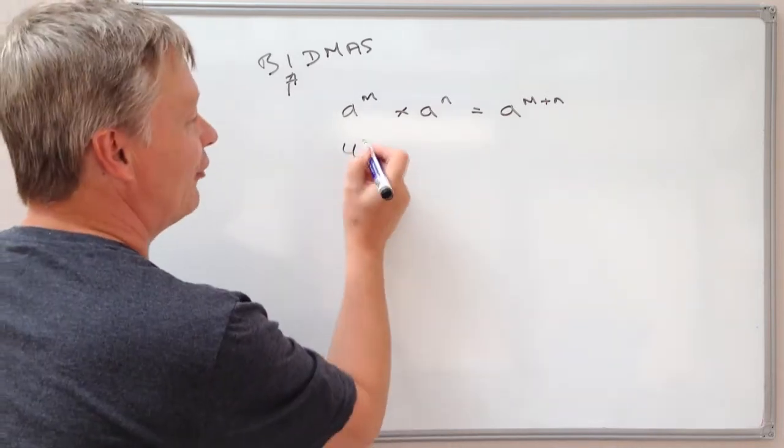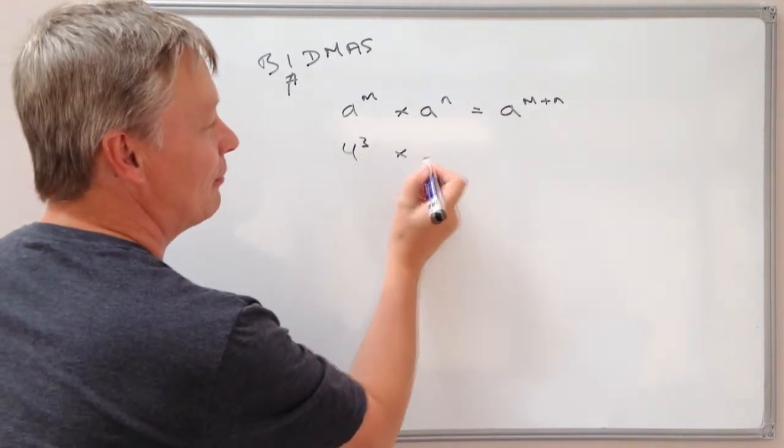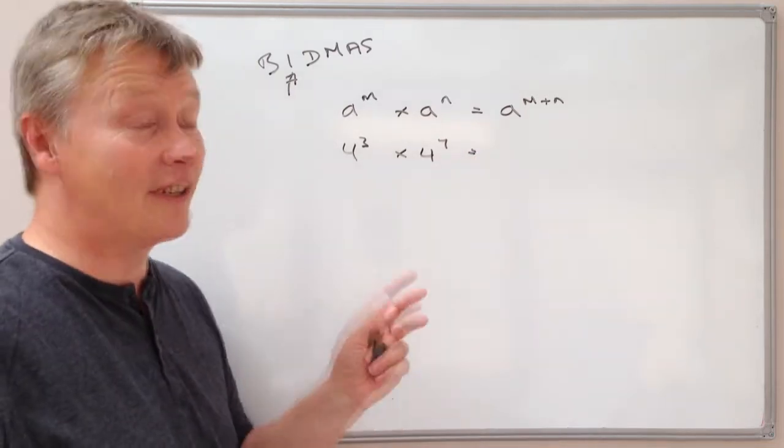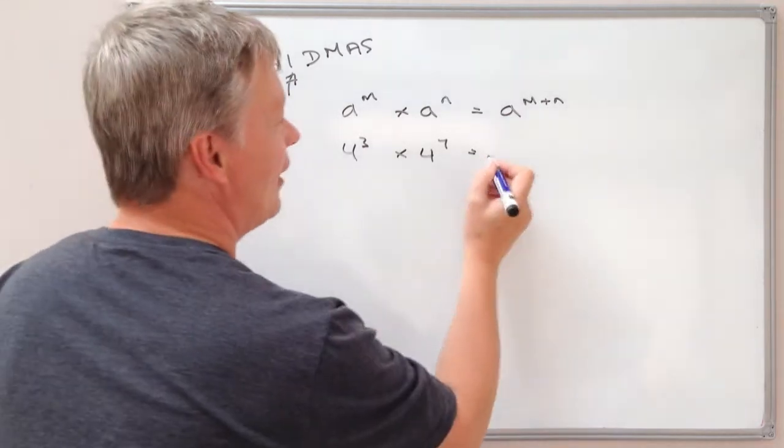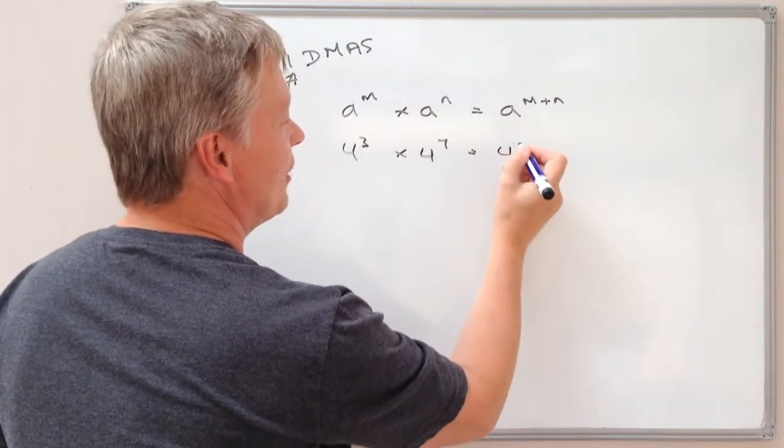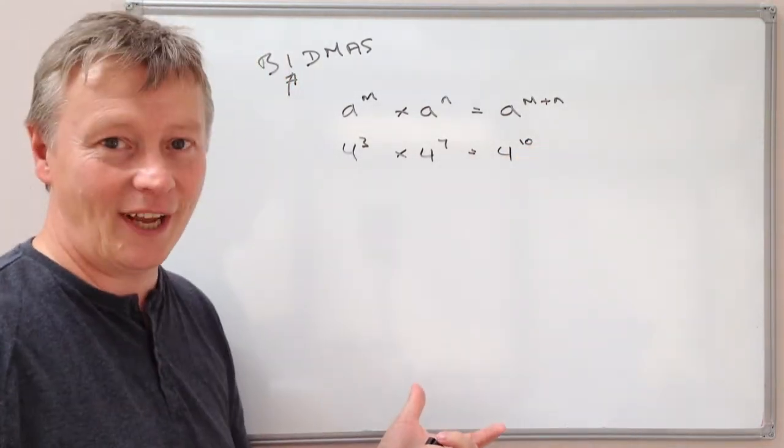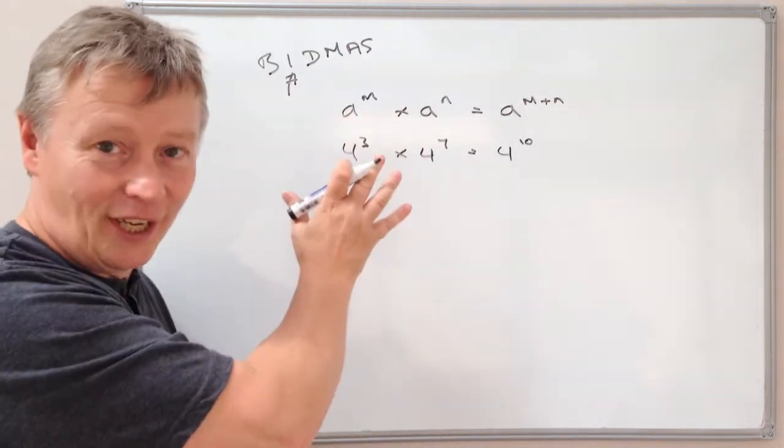So let's say you got 4 to the power of 3, you're going to multiply that by 4 to the power of 7. All you do is you add these two indices or powers together, and it gives you 4 to the power of 10, and that would be the answer. So that's the first rule you have to remember.